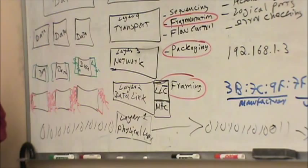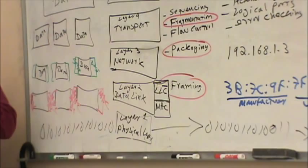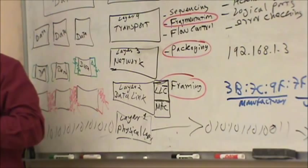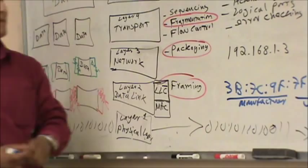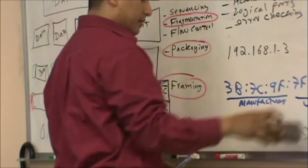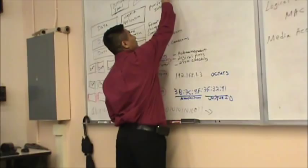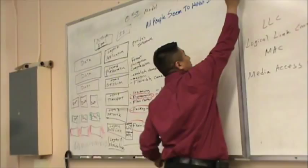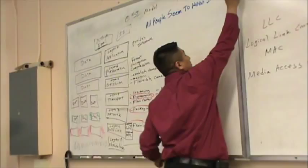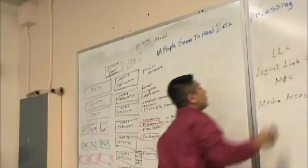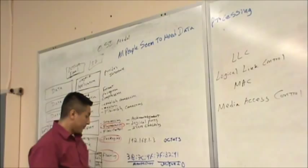You need to remember the seven layers of the OSI model, from layer 7 to layer 1 and from layer 1 to layer 7. An easy mnemonic: 'All People Seem To Need Data Processing' — Application, Presentation, Session, Transport, Network, Data Link, Physical. Going the other way: 'Please Do Not Throw Sausage Pizza Away' — Physical, Data Link, Network, Transport, Session, Presentation, Application.